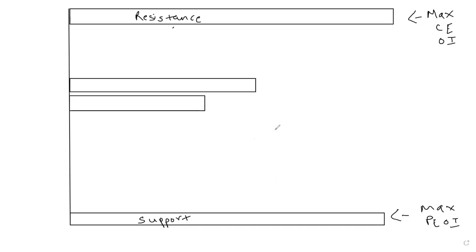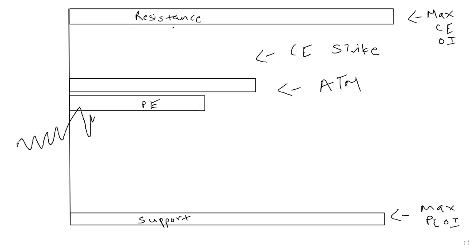Open interest is generally assumed from a seller's perspective, although it involves both buyers and sellers. Let's say this is my ATM strike — this is my put strike and this is my call strike. If the instrument's price is moving up, it is basically the heavy call writings on this ATM strike which are not letting the price surpass this level — some kind of resistance is getting built up, causing the instrument to reverse after taking resistance here.